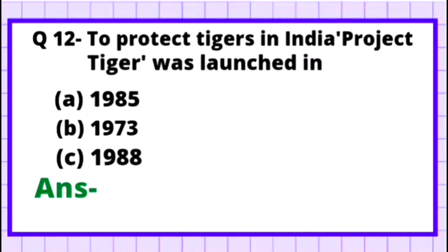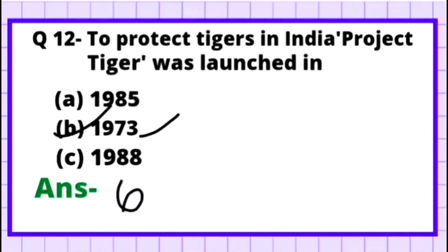Question 12: To protect tigers in India, Project Tiger was launched in — Option A: 1985, Option B: 1973, Option C: 1988. Project Tiger was launched in India in 1973. So the correct answer is Option B — 1973. This is a very important fact for competitions, so remember that Project Tiger was launched in 1973.